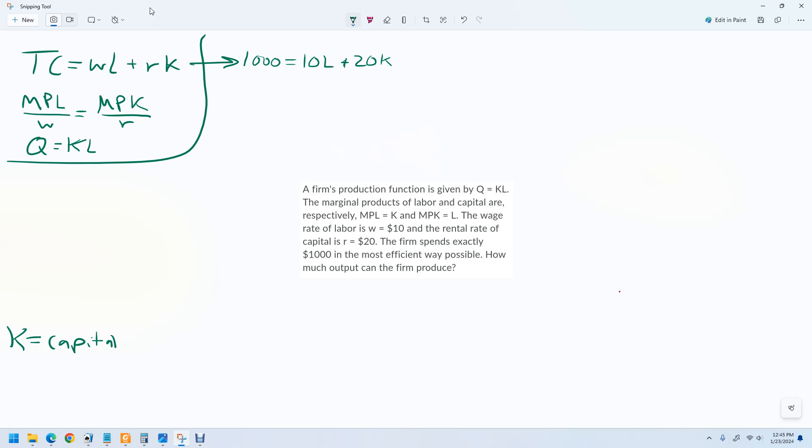And then we know this, too. We know that the marginal product of labor is K. That was worked out by finding the partial derivative with respect to L and the partial derivative with respect to K. So that's already done for us. So we're just going to plug that in. We'll say K right here, and then that is divided by 10, and then we'll say L here, and we'll divide that by 20.